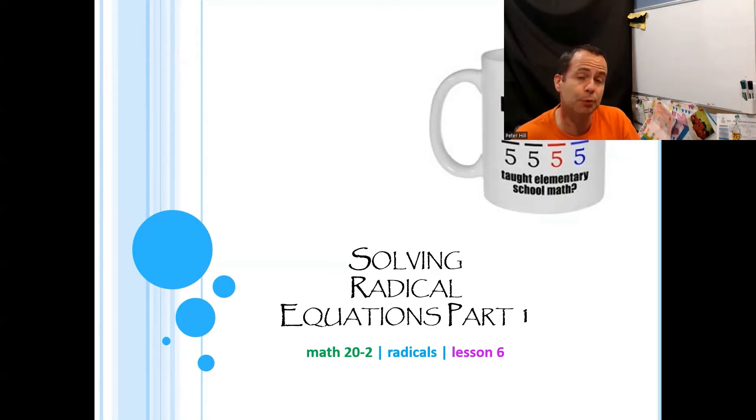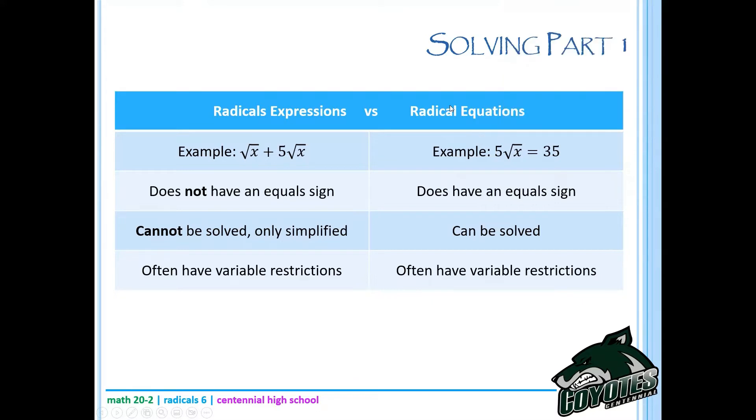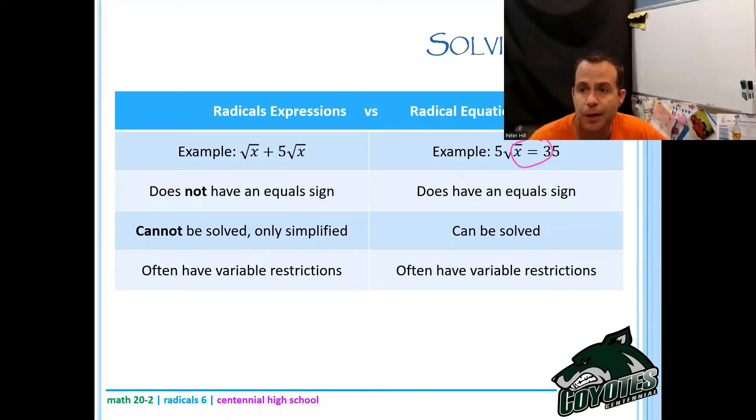First of all, what is an expression and what is an equation? Let's just compare and contrast those two things. Radical expressions versus radical equations. So an example, maybe I have root x plus 5 root x. Whereas with the radical equation, I have that equal sign right here. So I've got that equal sign. That's the important part of the radical equation. An expression doesn't have an equal sign. An equation does have an equal sign.